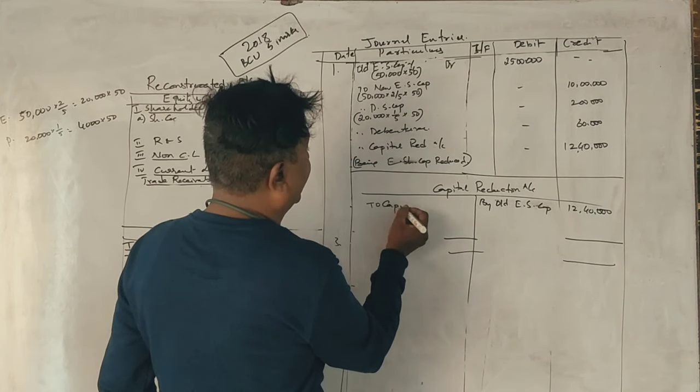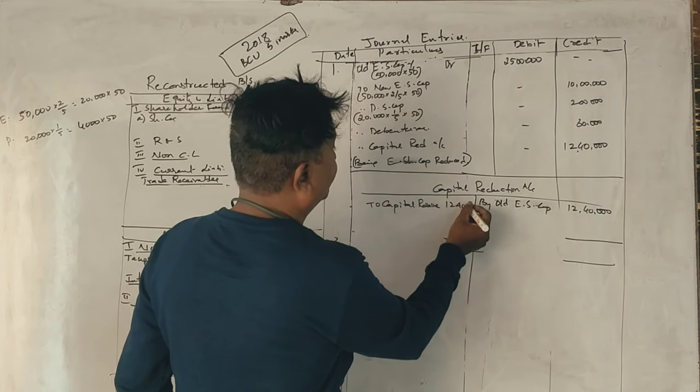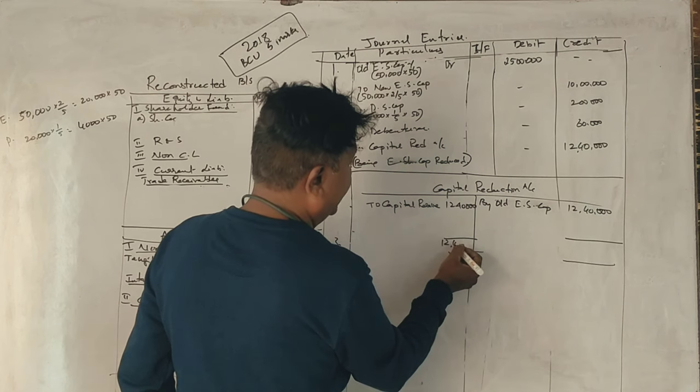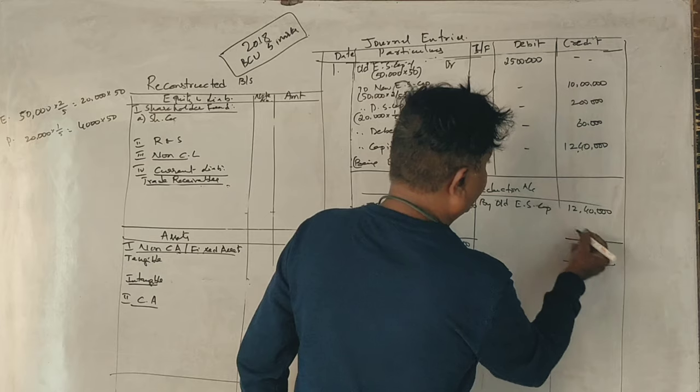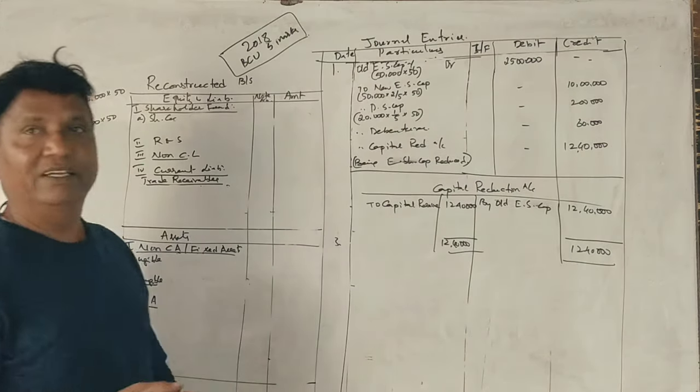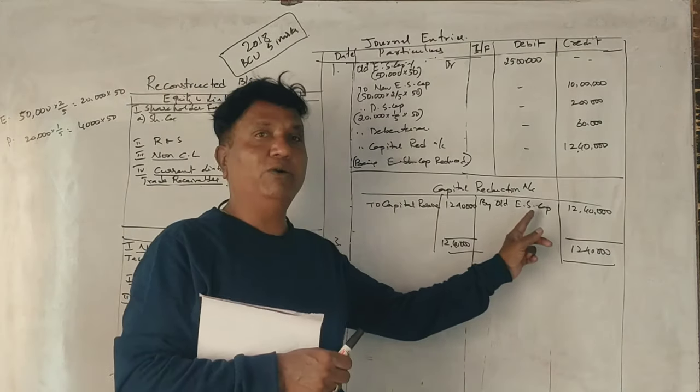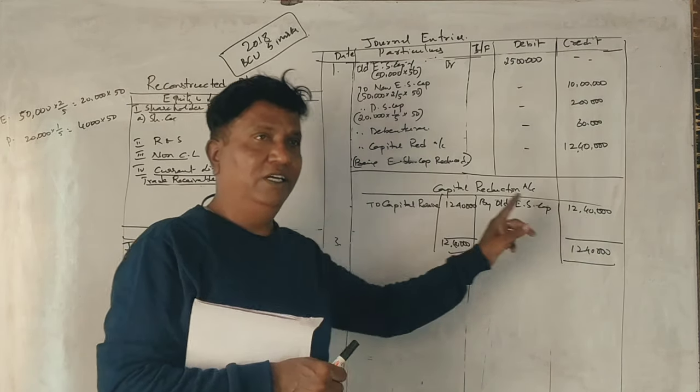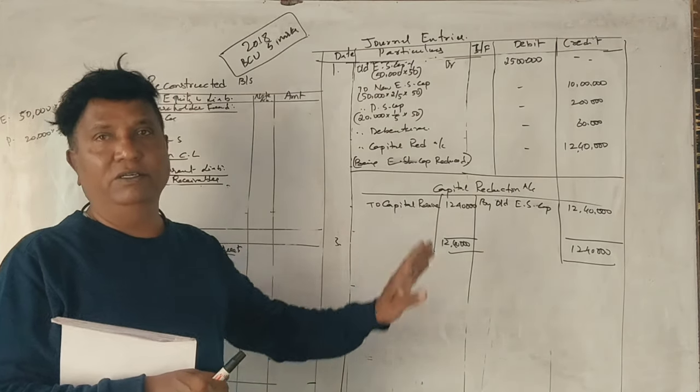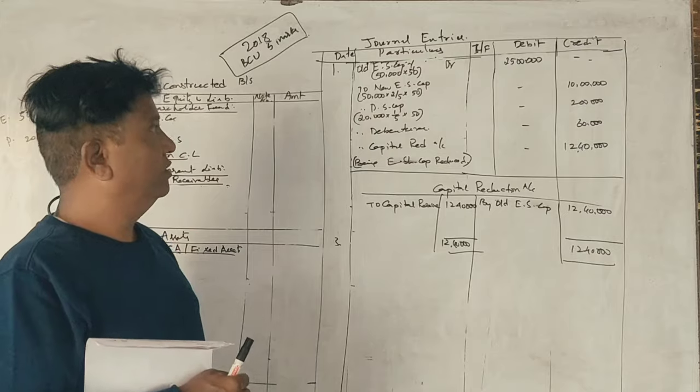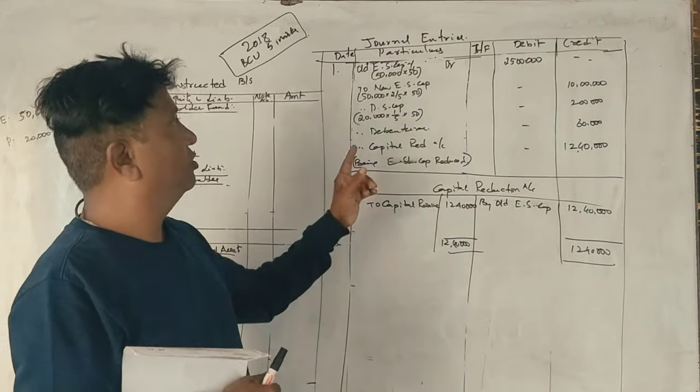We will have to do that capital reserve transfer mark. If you just need this account, you can mark this account. How much is it? 12,40. You can buy old equity share capital. You don't have any assets in the right of money. That means capital reserve. Old equity share capital.